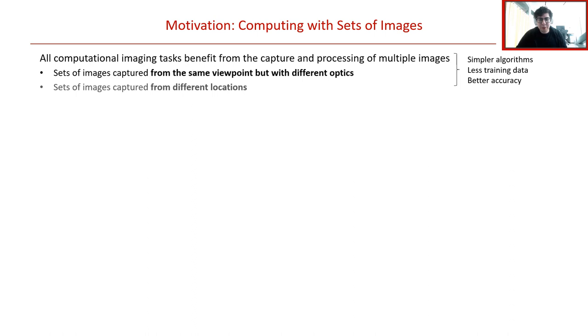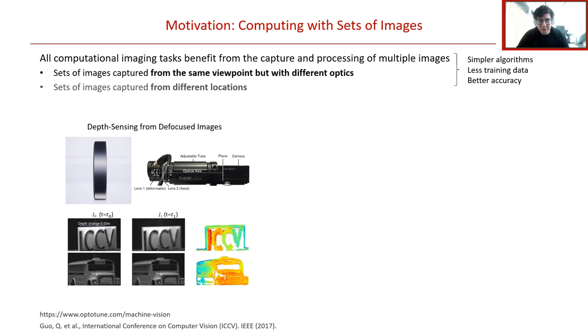This paradigm of computing on multiple images has appeared throughout the long history of computational imaging. As a concrete example, you can observe its application to depth sensing from defocused images. The camera shown on the right contains a deformable lens paired with a standard photo sensor. By applying a voltage, the shape of the lens is physically deformed and its focal length is shifted to different depths. One can then obtain a set of coded measurements by capturing multiple images sequentially over time while deforming the lens.